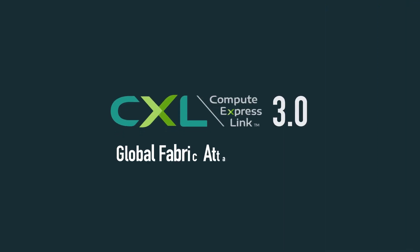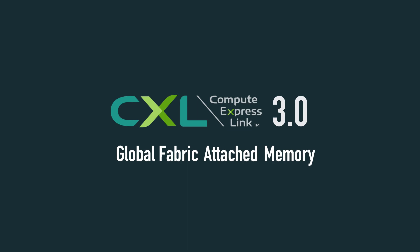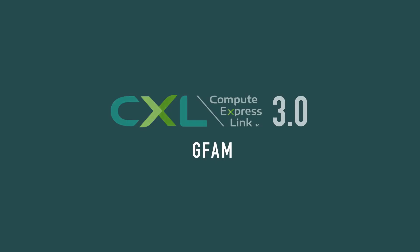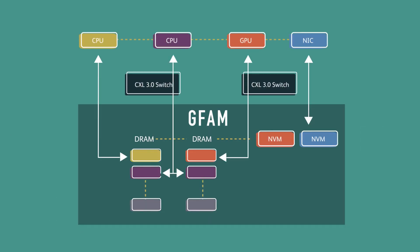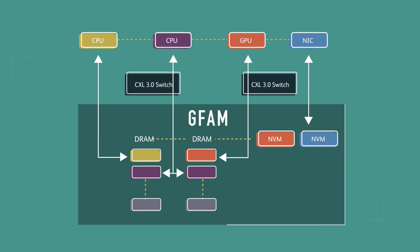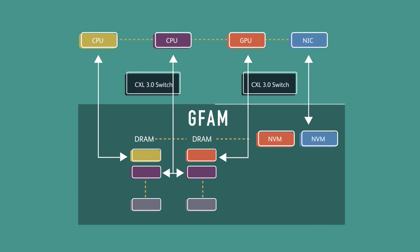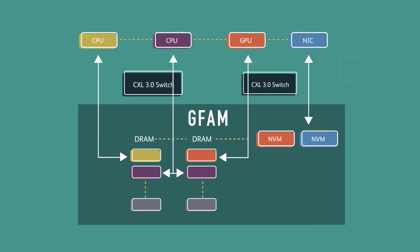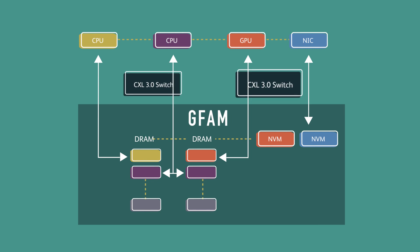CXL 3.0 enables global fabric attached memory, or GFAM, by disaggregating the memory from the processing unit and implements a large shared memory pool. Memory can be of many different types, which can be accessed by multiple processors directly connected to GFAM or through a CXL switch.